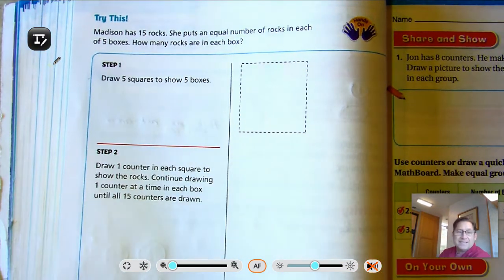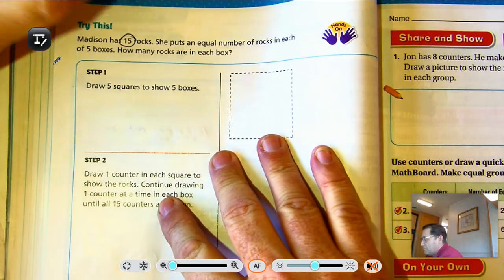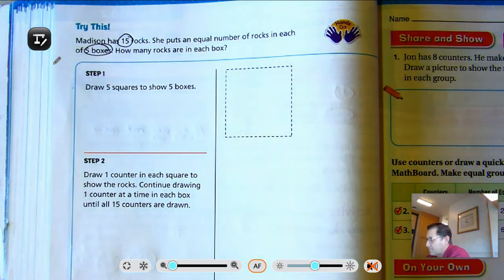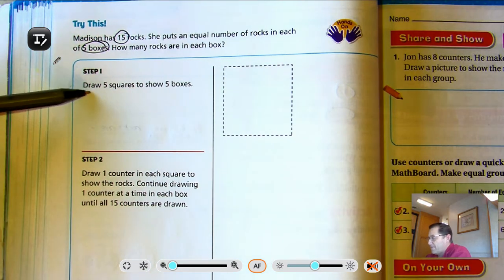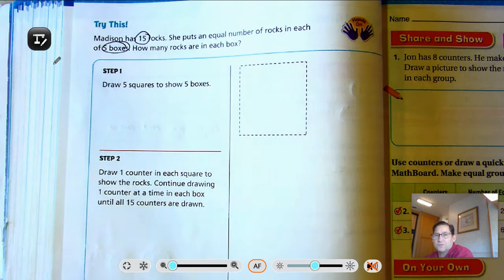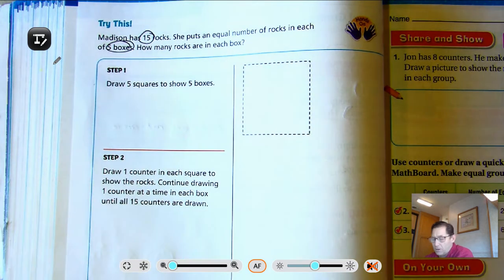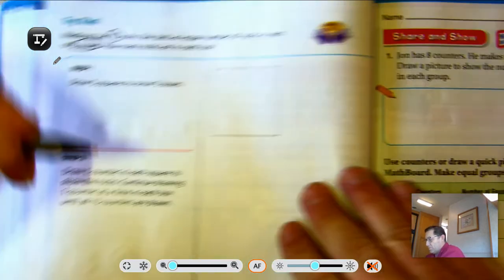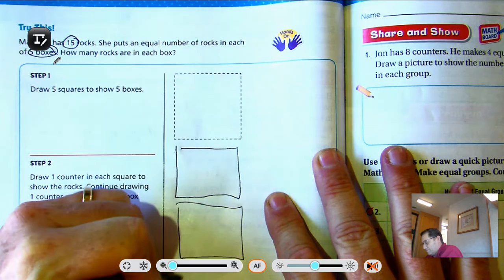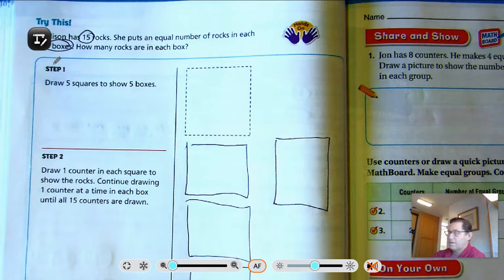Page 224, try this one. Madison has 15 rocks. He puts an equal number of rocks in each of five boxes. How many rocks are in each box? So here they want us to draw five squares to show five boxes. Circles are fine too. If you just want to keep drawing circles, those are fine. It's just a way of showing the number of groups that we have. So the five boxes are our groups.